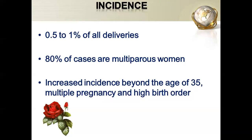What is the incidence? Out of all deliveries, 0.5 to 1% may have placenta previa, and 80% of those cases will be multiparous women. There are risk factors for this condition: age beyond 35 years, multiple pregnancy, and high birth order.